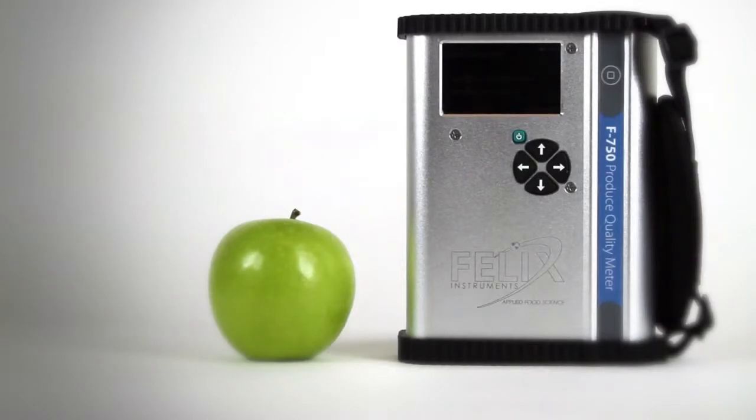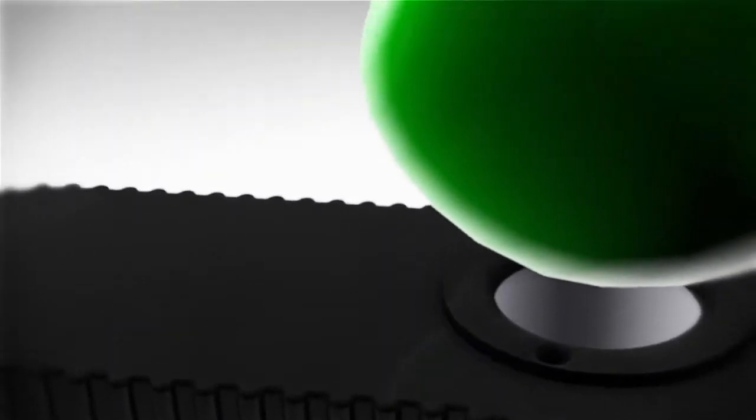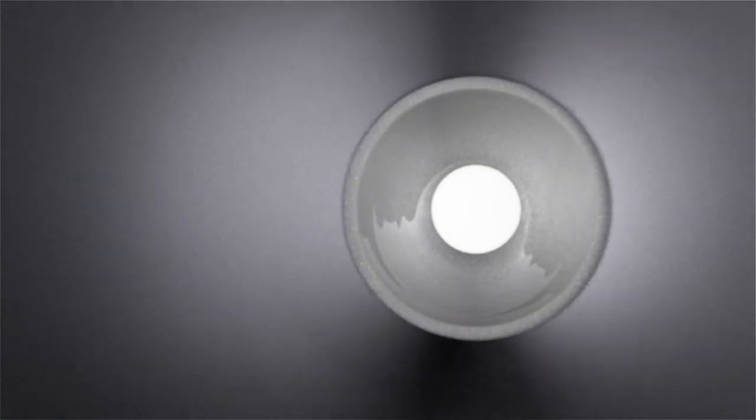The F750 Produce Quality Meter uses an interactance optical design to collect information from tissue of many commodities. The F750 uses a halogen incandescent lamp to provide visible and near infrared light.